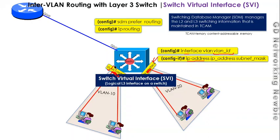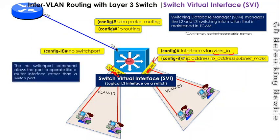Not only can we allow routing between VLANs, but we can also use one of the physical ports of the switch to connect it with an external router. That router may be connected with the internet. For that physical port, we use the command 'no switchport', which allows the port to operate like a router interface. Once it is a router interface, we can assign an IP address to it and use it in routing.